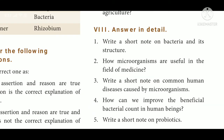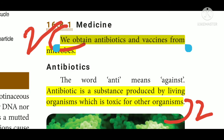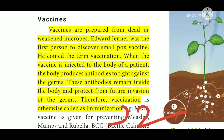Question 2: How are microorganisms useful in the field of medicine? We obtain antibiotics and vaccines from microbes. An antibiotic is a substance produced by living organisms which is toxic for other organisms. Vaccines are prepared from dead or weakened microbes. Edward Jenner was the first person to discover the smallpox vaccine and coined the term vaccination. When a vaccine is injected into the body of a patient, the body produces antibodies to fight against the germs. These antibodies remain inside the body and protect from future invasion of the germs. Therefore, vaccination is otherwise called immunization.